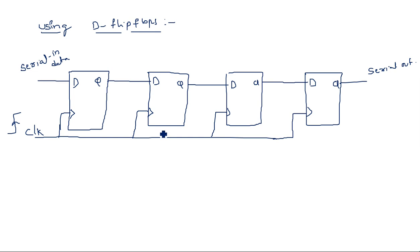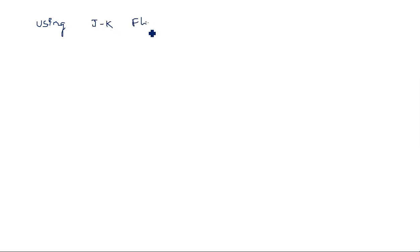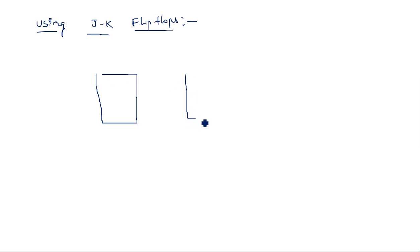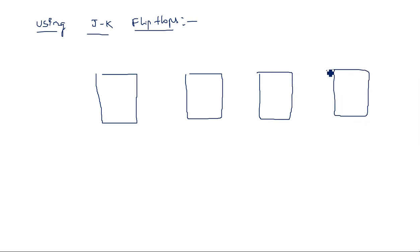The same register can also be constructed using JK flip-flops — just by using the same construction but replacing D flip-flops with JK flip-flops. Four JK flip-flops are considered in cascade. In order to make a JK flip-flop act as a D flip-flop, we should place an inverter between J and K.